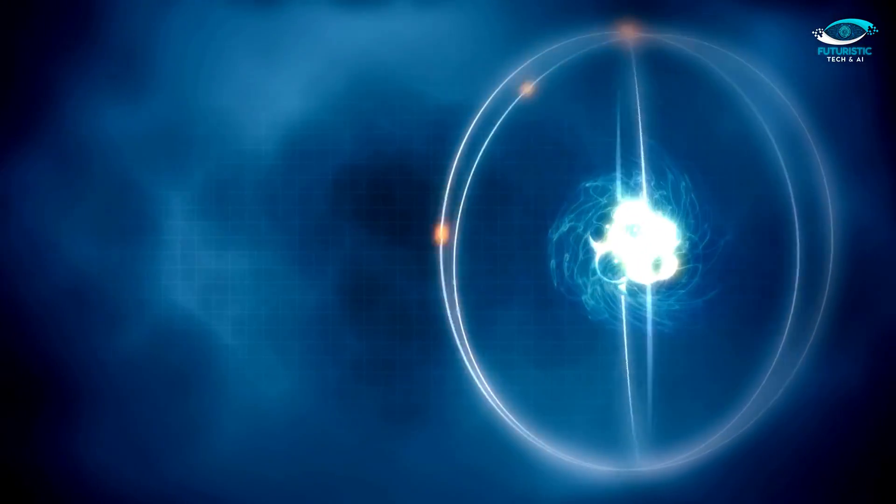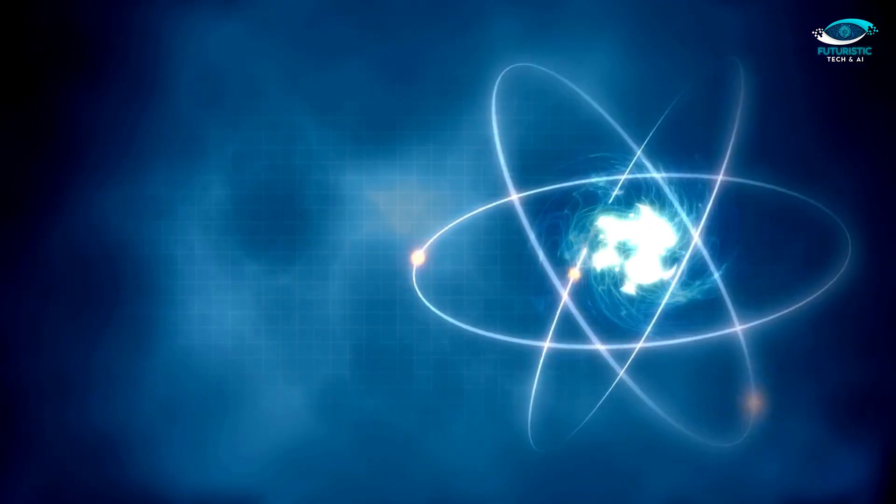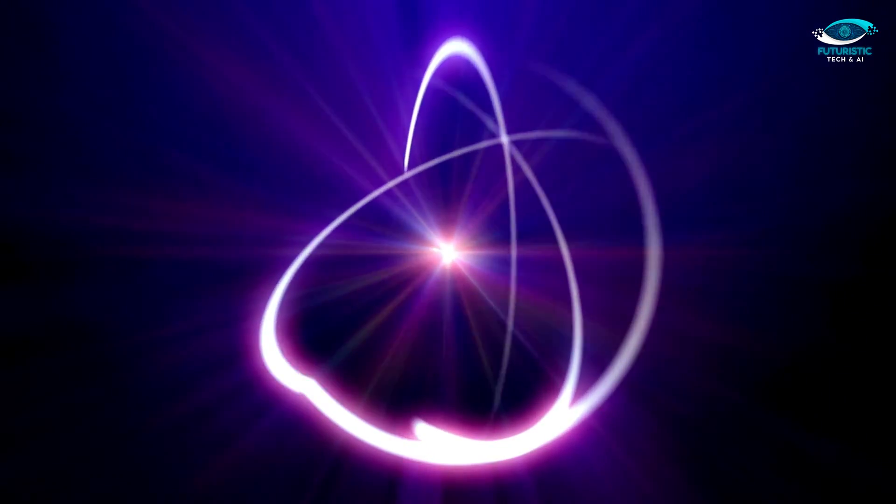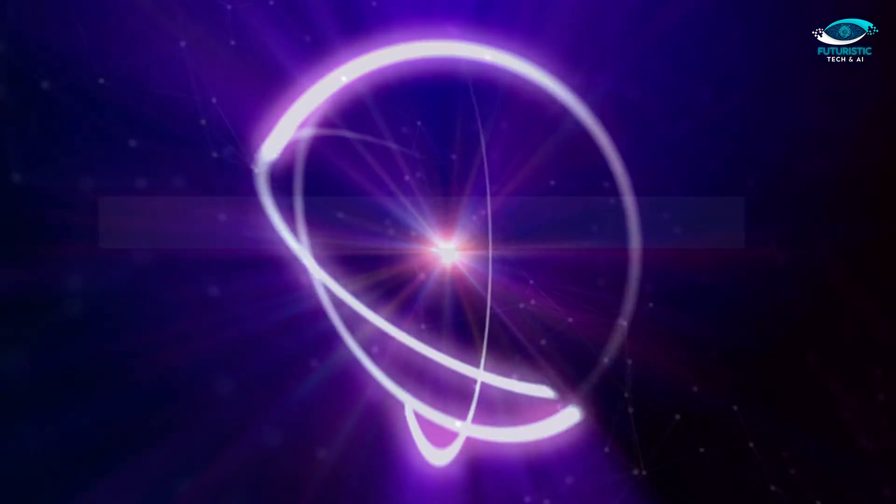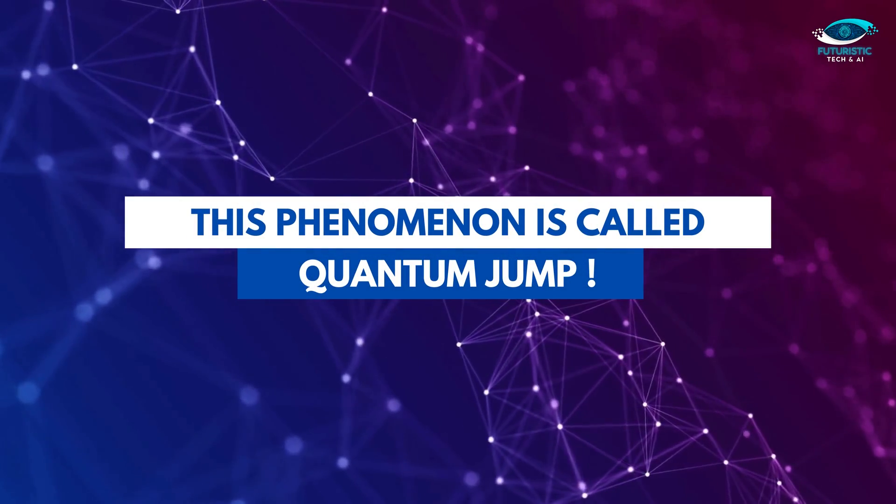It works both ways. The electrons get excited to higher orbits when light is shown. Electrons absorb photons of energy and use this energy to jump to higher shells. This phenomenon is called quantum jump.